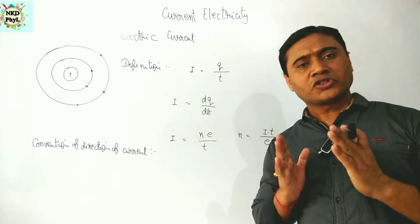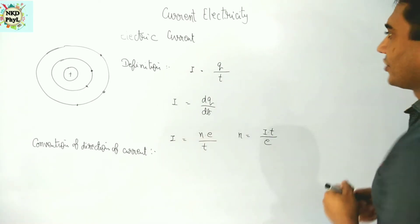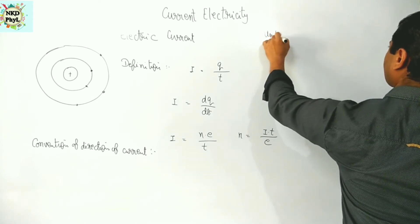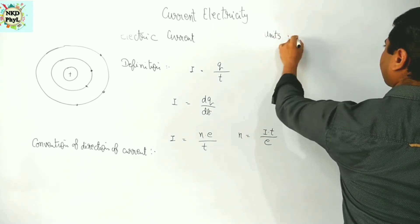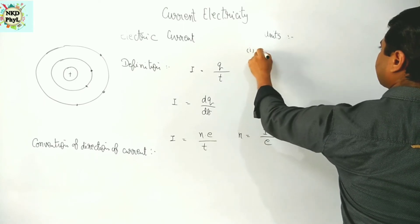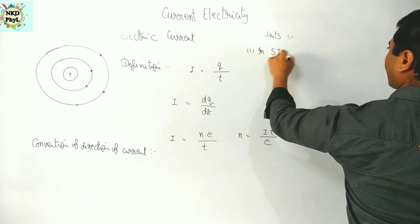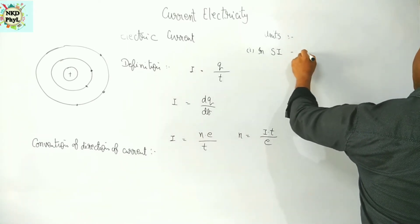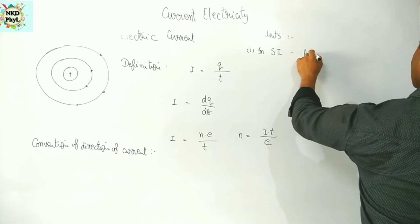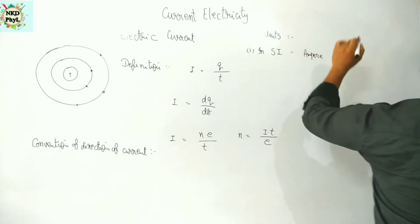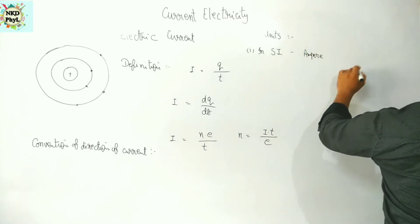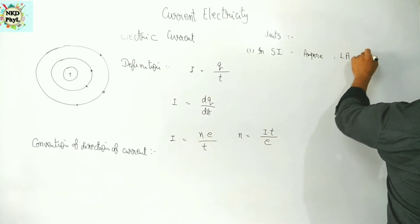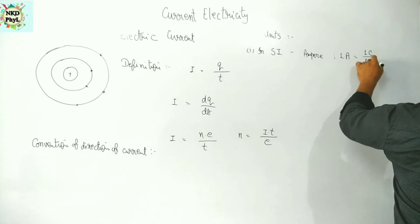Now let's discuss the unit of electric current. In the SI system, current is measured in amperes, and ampere is further defined as: one ampere equals one coulomb per one second.